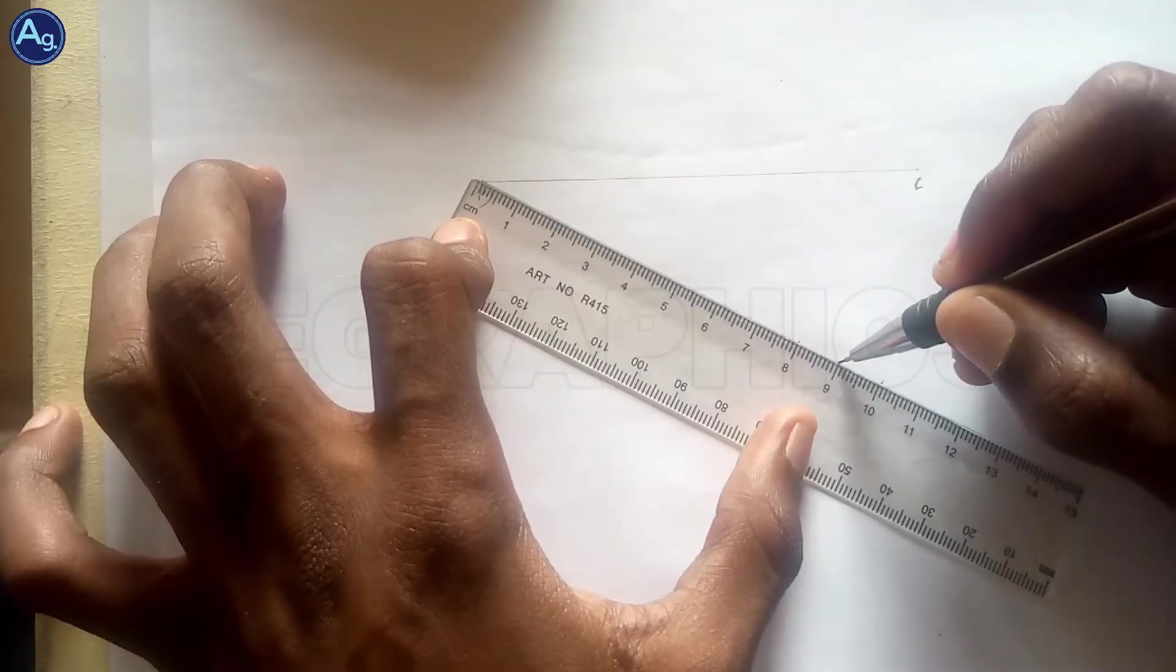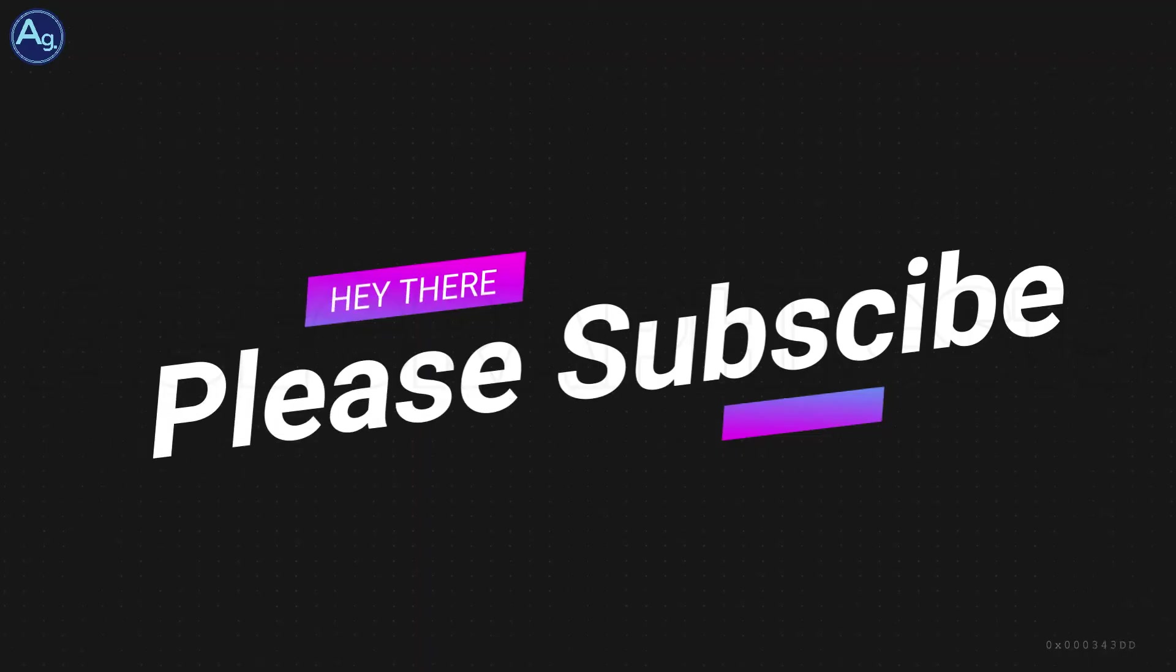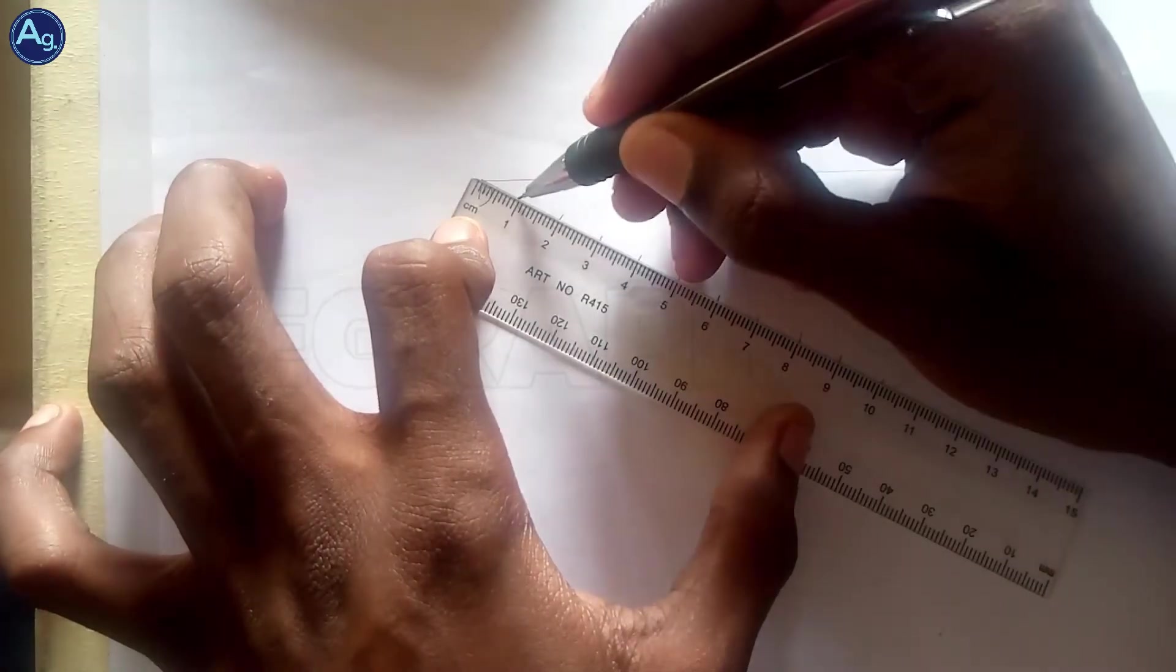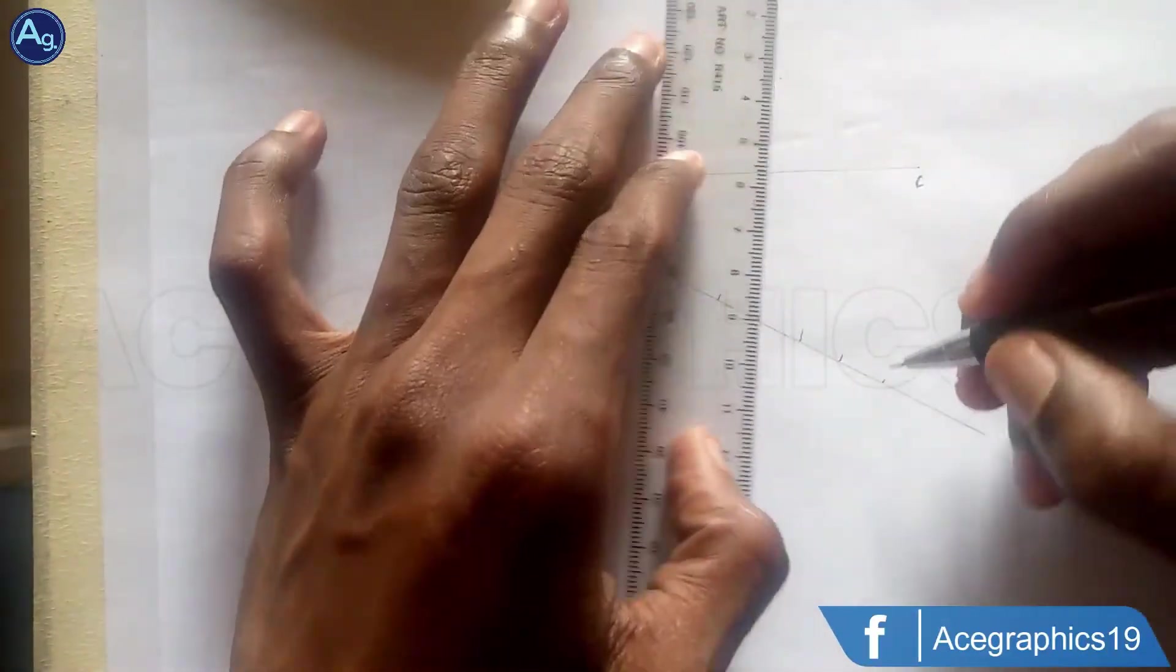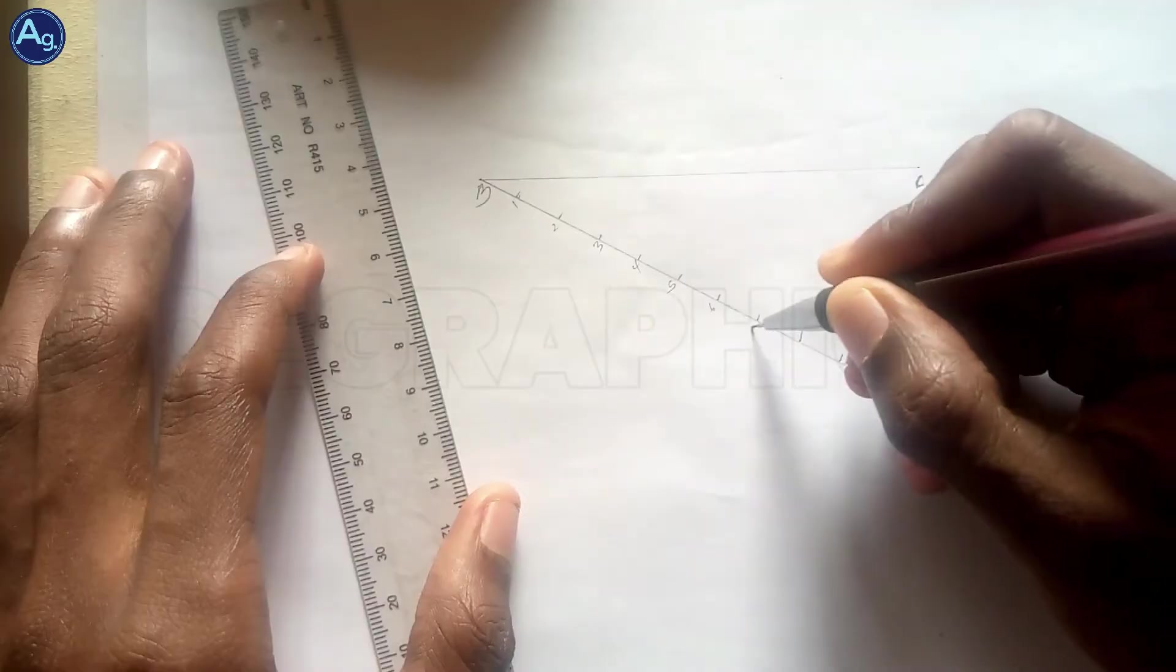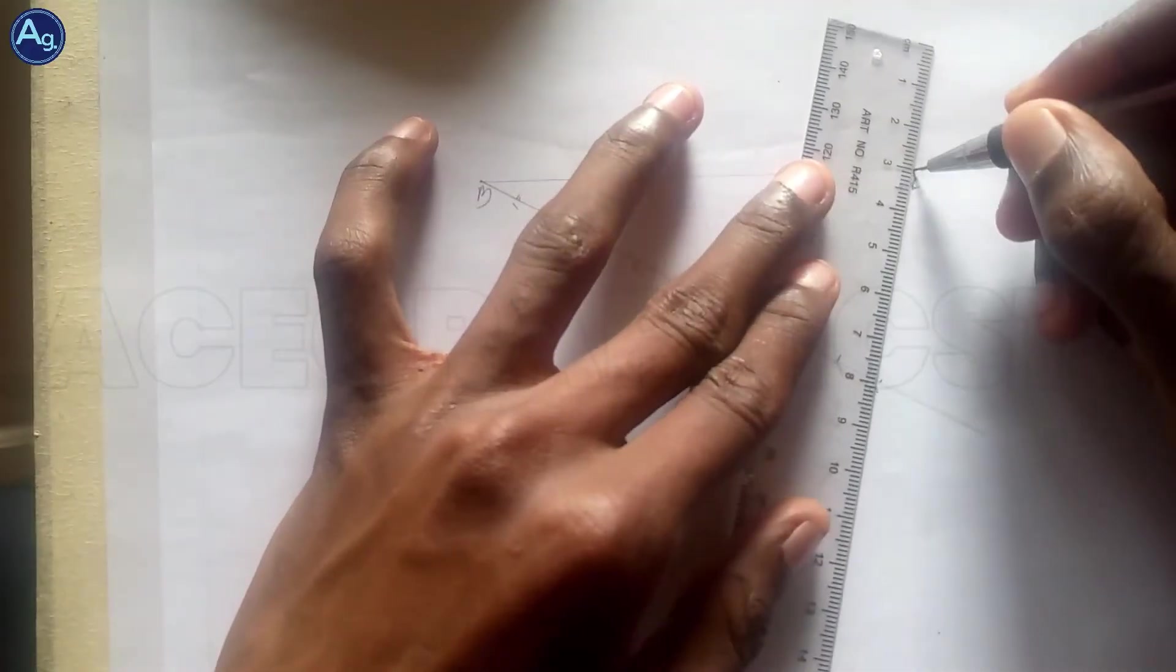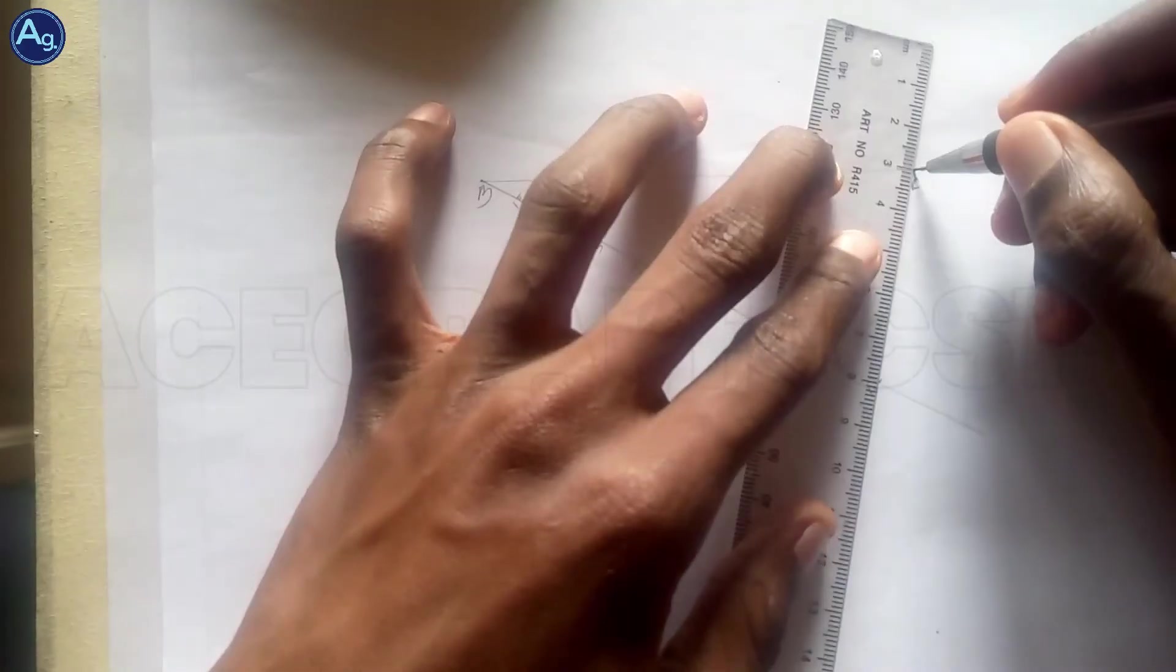Ten upwards: eight, seven, six, five, four... The numbers are one, two, three, four, five, six, seven, eight, nine, ten. Then from this point C to ten, you join it. Join the points together.